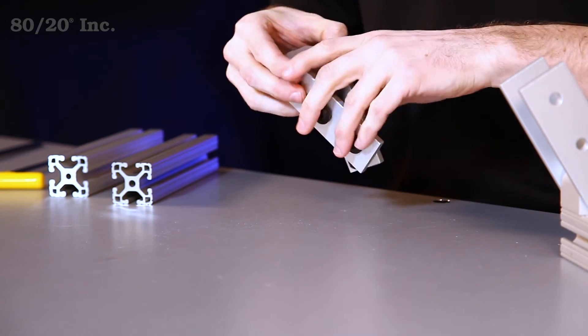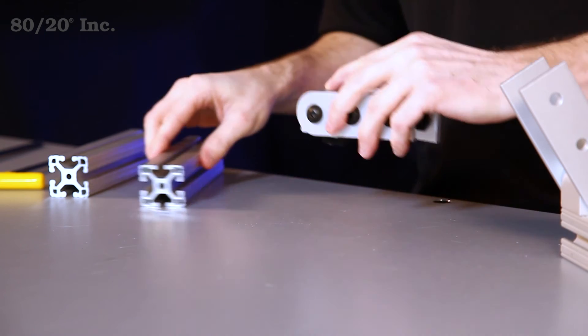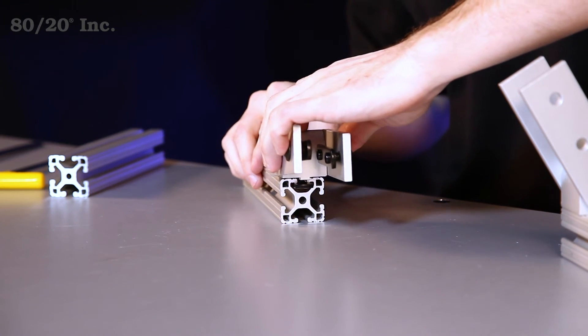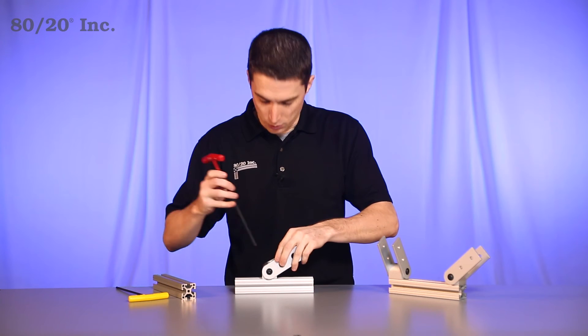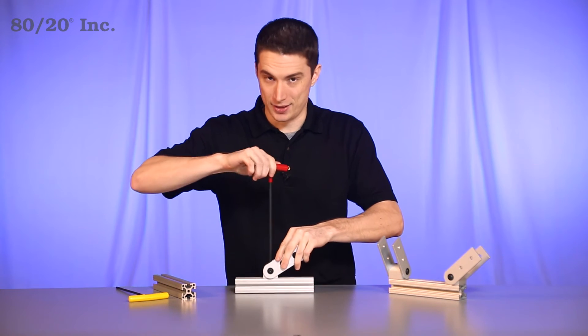Once we have that ready to go, we'll take our first bar and slide the pivot nub right onto it. Once we've found our location, we'll take a wrench and tighten that into place.